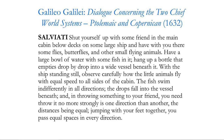Salviati says: Shut yourself up with some friend in the main cabin below decks of some large ship. And have with you there some flies, butterflies and other small flying animals. Have a large bowl of water with some fish in it. Hang up a bottle that empties drop by drop into a wide vessel beneath it. With the ship standing still, observe carefully how the little animals fly with equal speed to all sides of the cabin, the fish swim indifferently in all directions, the drops fall into the vessel beneath. And throwing something to your friend, you need throw it no more strongly in one direction than another, the distances being equal.